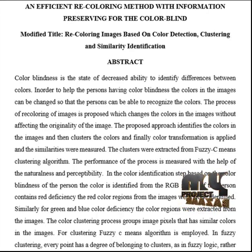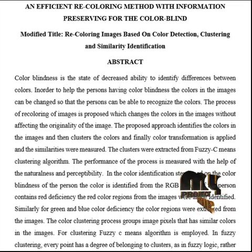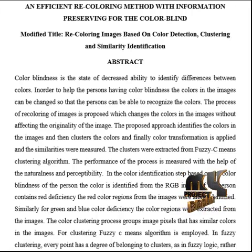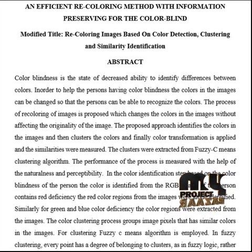Each clustered region represents regions of different intensity. The color transformation process applies a transformation matrix to the input images in the needed color portions. The transformation matrix converts the original pixels from the images into different colors based on the color blindness of the person. The performance of the process is measured based on naturalness and perceptibility of the resulting color-transformed image. The values are calculated based on the difference between the original RGB image and the transformed image.